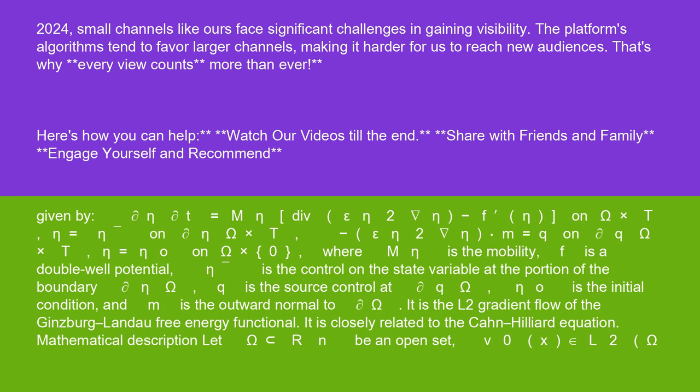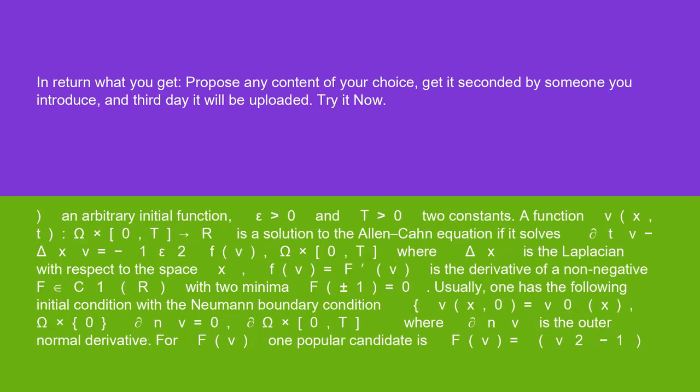Mathematical description: Let Ω ⊂ ℝⁿ be an open set, v₀(x) ∈ L²(Ω) an arbitrary initial function, ε > 0 and T > 0 two constants. A function v(x,t): Ω × [0,T] → ℝ